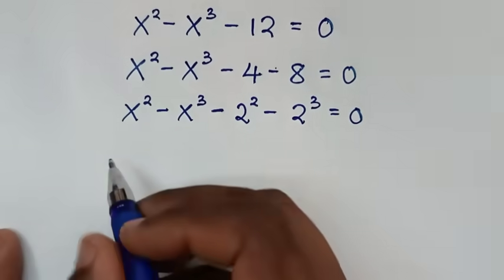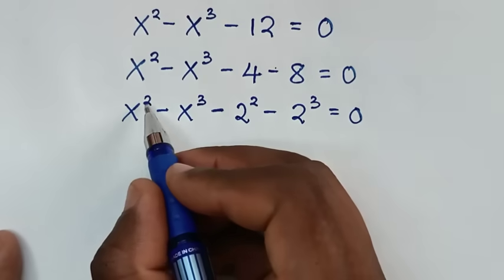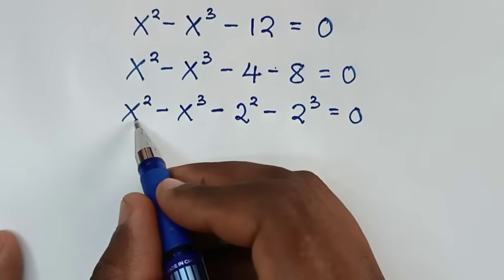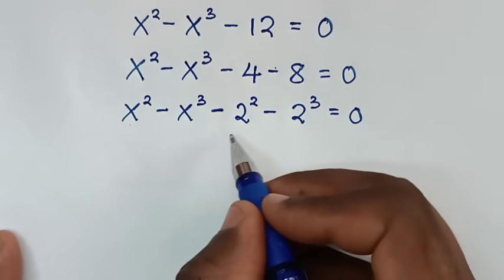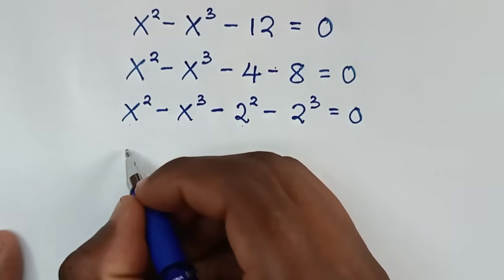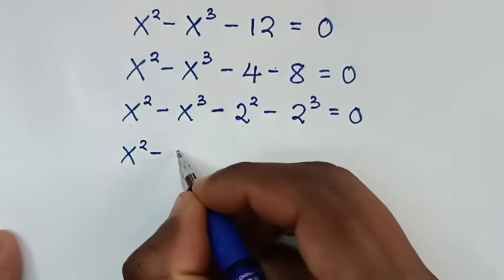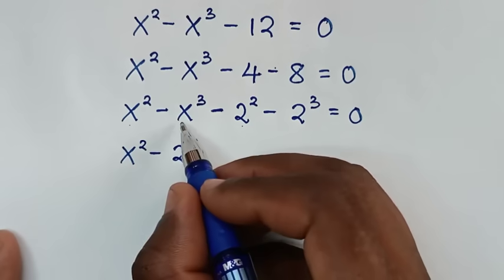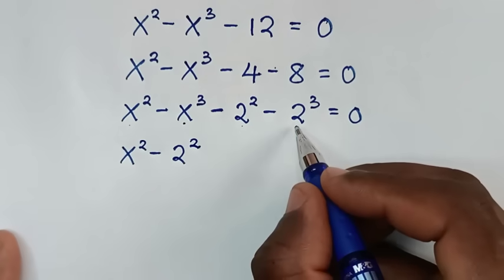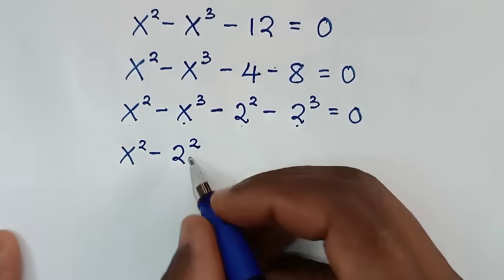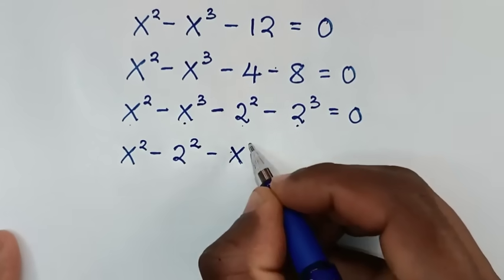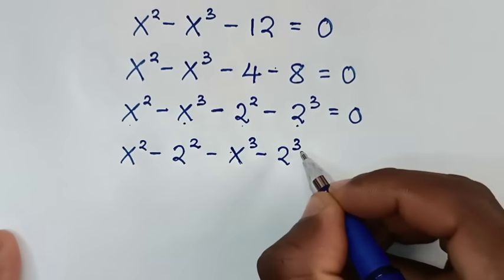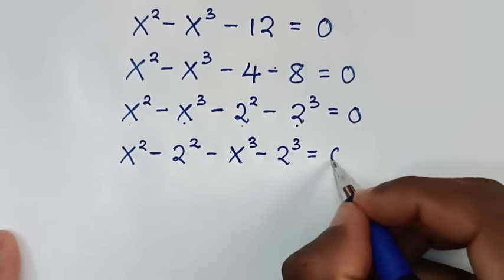In the next step we group terms with the same power together. So we have x squared minus 2 squared, then minus x to the power 3 minus 2 to the power 3, all equal to 0.